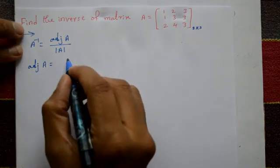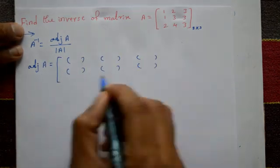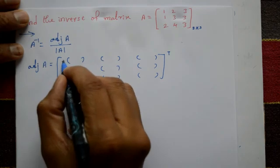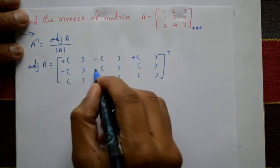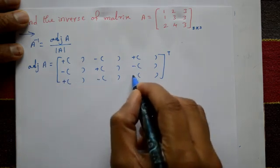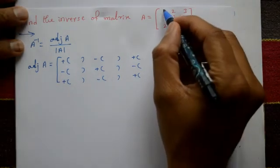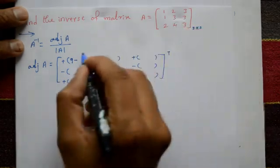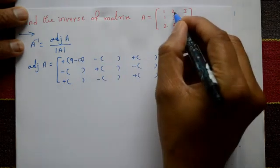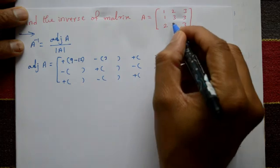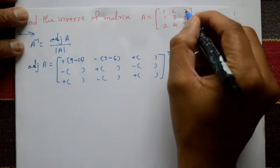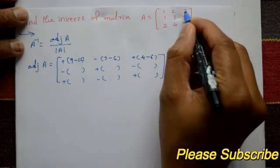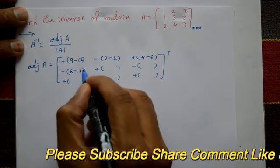The adjoint of A equals the transpose of the cofactor matrix. The sign pattern is plus minus plus, minus plus minus, plus minus plus. Take the first element: multiplication three into three is nine minus four into three is twelve. Second element: one into three is three minus six. Third element: four minus six.